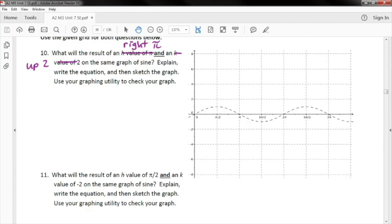can you guys write me an equation for sine that is shifted to the right π, and then up 2?